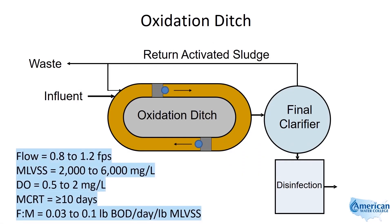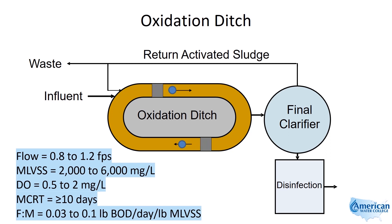The oxidation ditch is an extended aeration process, meaning it is a low-rate process with a relatively high hydraulic retention time in the range of 24 hours. The activated sludge is moved around the oval basin by rotors and brushes, which are mechanical aerators represented here in the picture by the gray rectangles on each side of the ditch. This type of system is used in small to medium-sized applications.